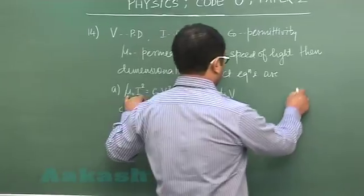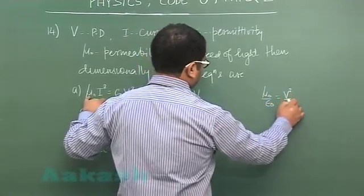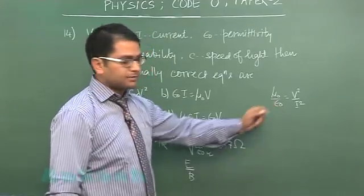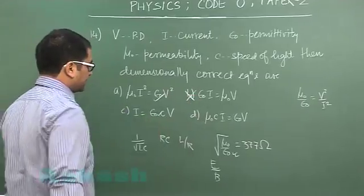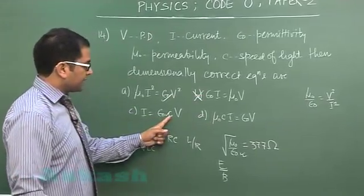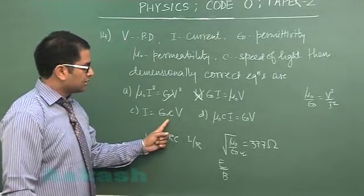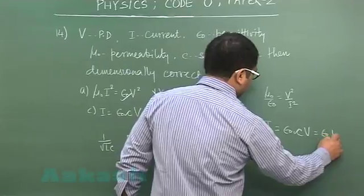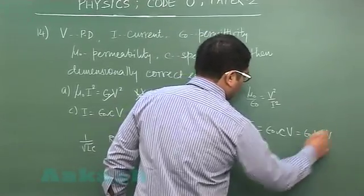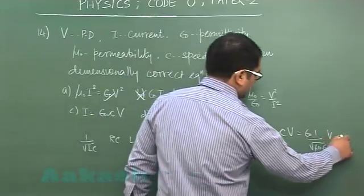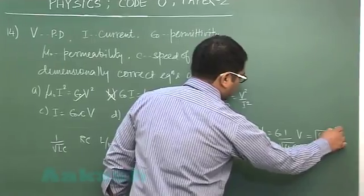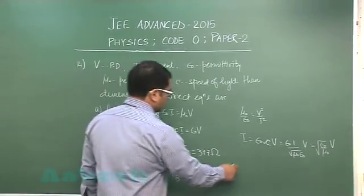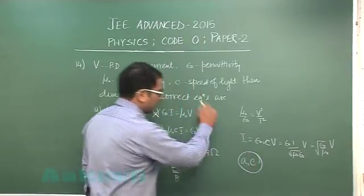For option A: μ₀/ε₀ = V²/I², which is correct dimensionally because √(μ₀/ε₀) is resistance, so this is satisfied. If A is correct, the similar-looking option is incorrect. Option C is also correct because C = 1/√(μ₀ε₀), so ε₀·C·V = ε₀ · (1/√(μ₀ε₀)) · V = √(ε₀/μ₀) · V, which is exactly in the format V/R, i.e., current I. So C is correct and D is incorrect. The correct options for question 14 are A and C.